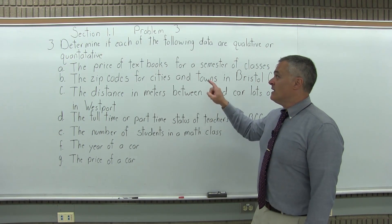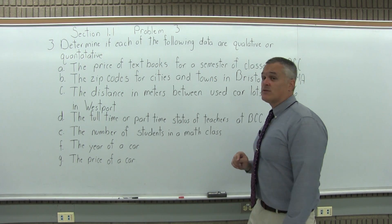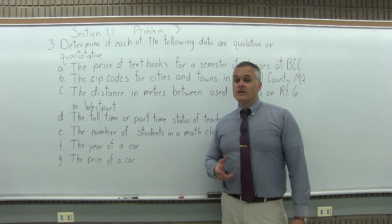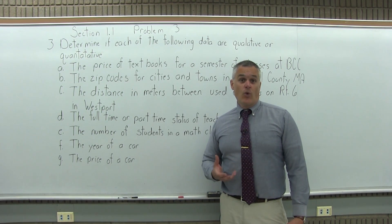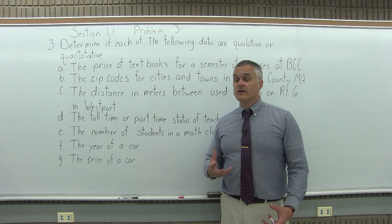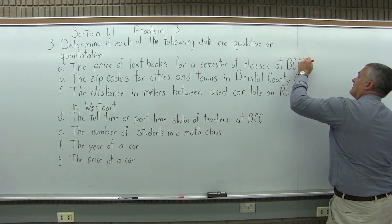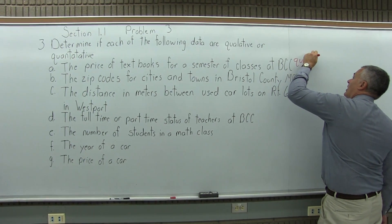The first one, Part A, the price of textbooks for a semester of classes at BCC. So you will get a number of answers, and that number does measure a quantity of something, the quantity of money you have to pay for your textbooks. So Part A would be quantitative.